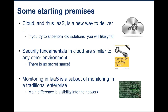Lastly, monitoring in infrastructure as a service is really a subset of monitoring in a traditional enterprise. The sources you collect from will be a subset of what you had in your enterprise. The biggest difference is typically visibility into the network — there is no such thing as a span port currently that you can get access to in IaaS.